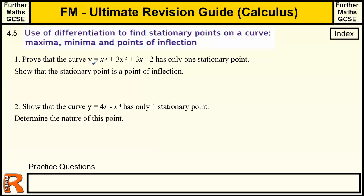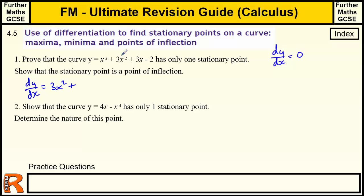Question 1: Prove that the curve y equals x cubed plus 3x squared plus 3x minus 2 has only one stationary point. A stationary point is where the differential equals zero. So we differentiate: dy/dx equals 3x squared plus 6x plus 3. We make that equal to zero and divide throughout by 3 to simplify.